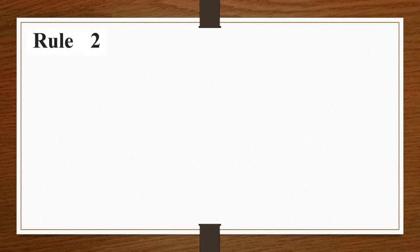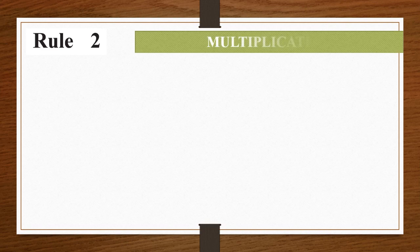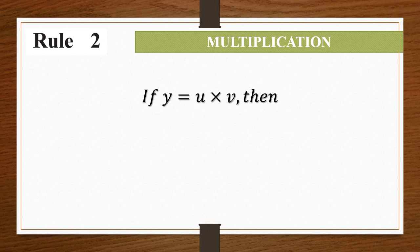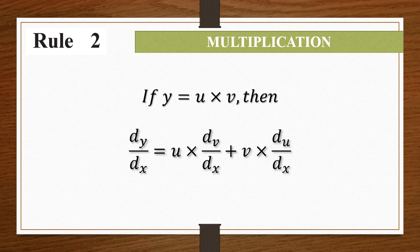Now we move forward to rule number 2, which is based on multiplication. If y equals u multiplied by v, meaning two separate equations are being multiplied, then dy upon dx equals u times dv upon dx plus v times du upon dx. We need u and v along with their separate differentiations — the value of u is multiplied with the differentiation of v, and v is multiplied with the differentiation of u. It is a kind of cross multiplication.